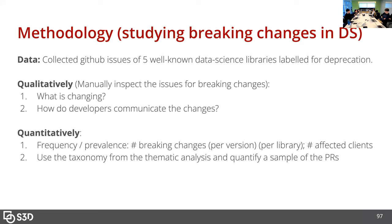My methodology was to study breaking changes. I collected issues from five well-known data science libraries — which I did not pick, they encompass around 90% of dependencies of Python data science projects. These issues were all labeled for deprecations. I first wanted to qualitatively inspect the issues to understand what was changing in scope and how developers were conveying these changes to clients. The second part was quantitative: I wanted to know the frequency and prevalence of breaking changes, whether clients were actually being affected, and then quantify and label a set of the issues using the taxonomy I built.